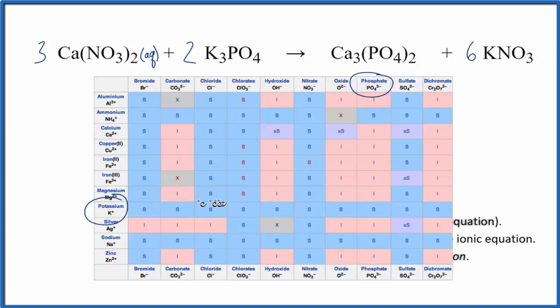You see many of the phosphates are insoluble but potassium phosphate has an S. That means it's soluble and it'll dissolve. So this will dissolve so we write aqueous because it will be dissolved in water.